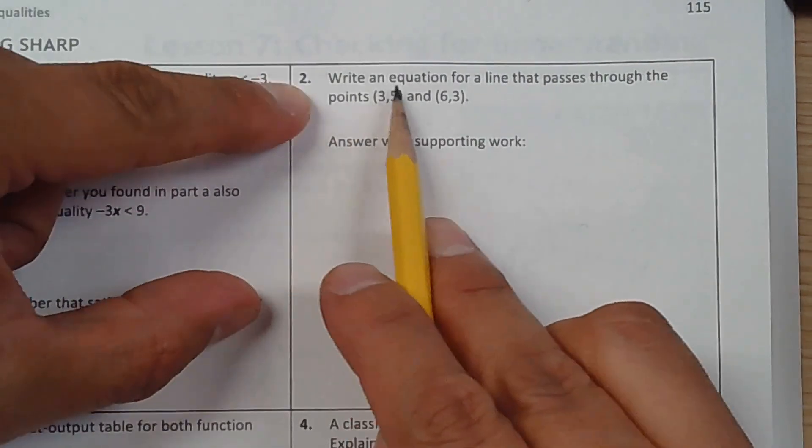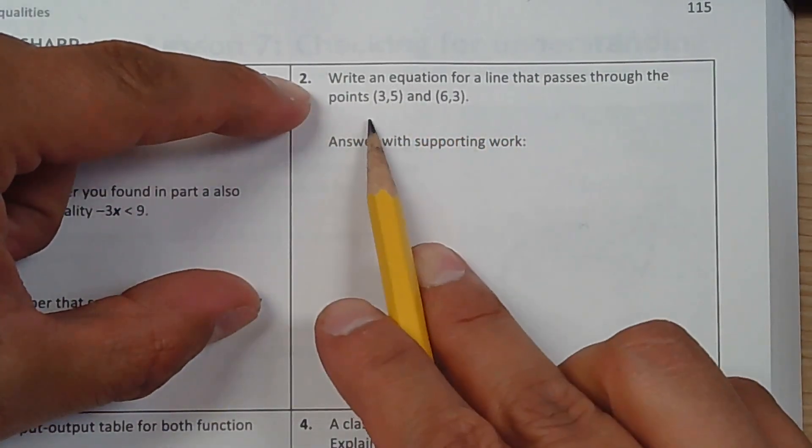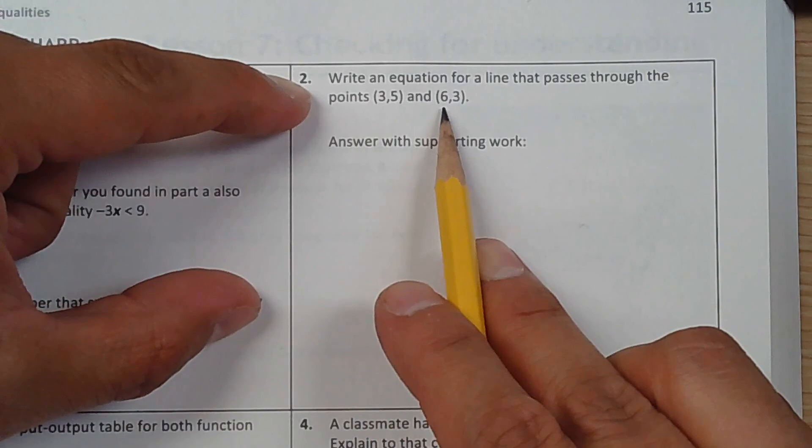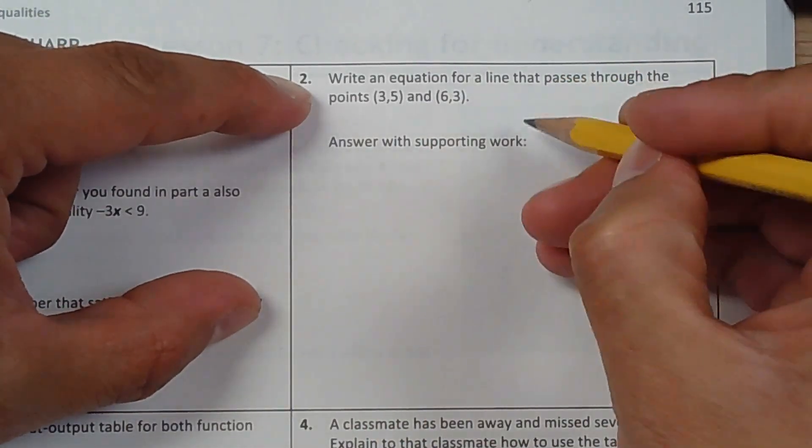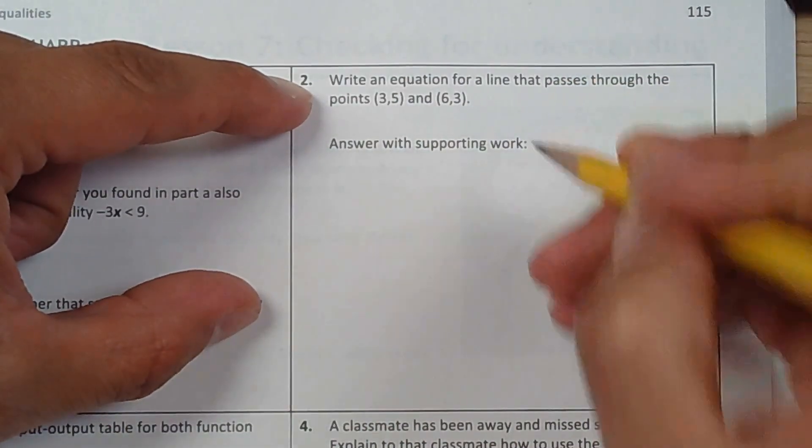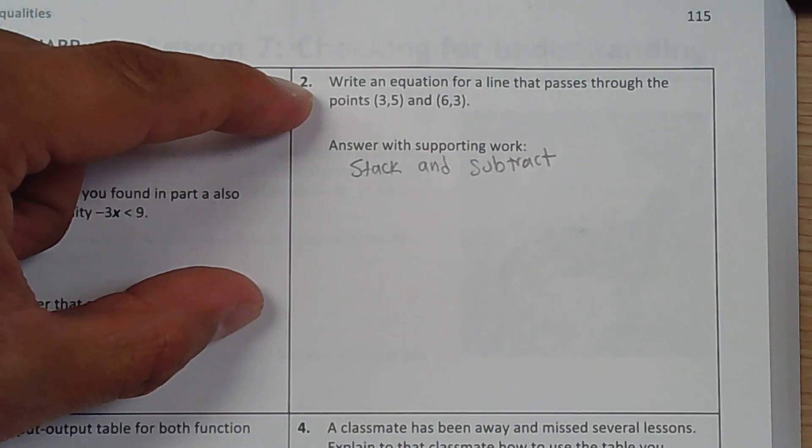Alright, so here they ask you, write an equation for a line that passes through the point (3,5) and (6,3). The method we're going to use is called stack and subtract.